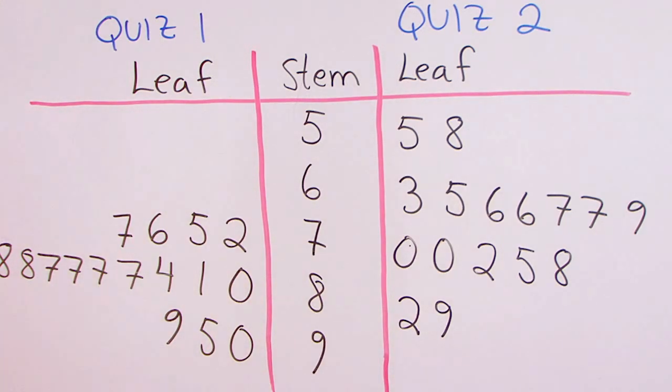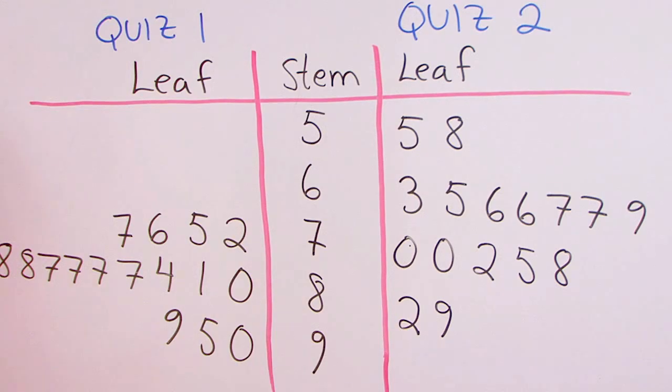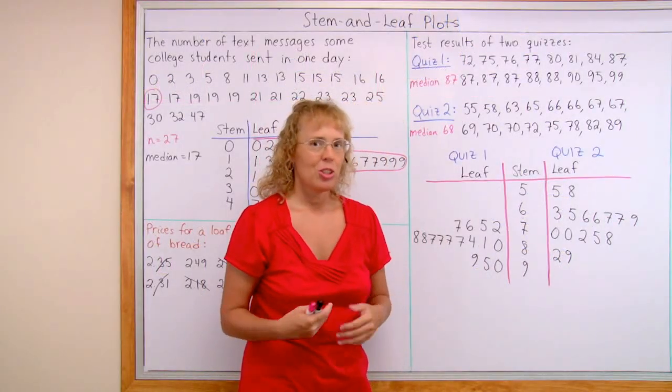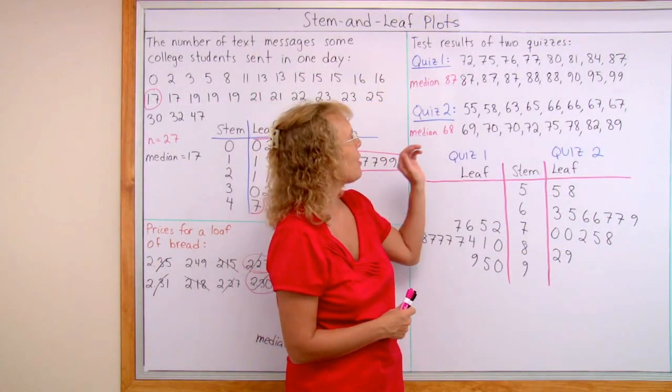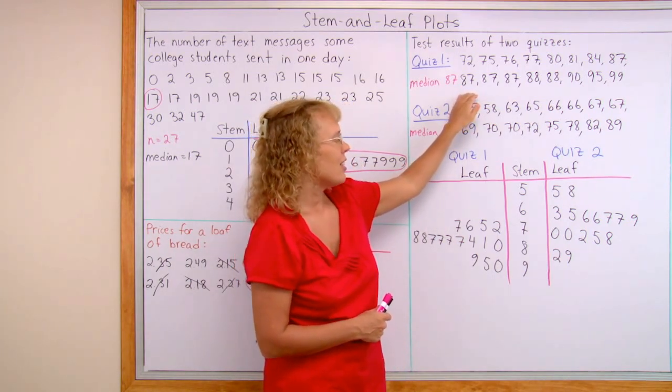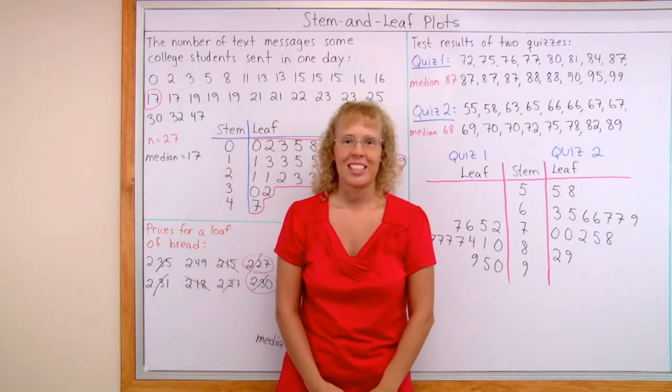And stem and leaf plots are nice, as you can see, because you can see the distribution of the data. You can see the shape of the data, kind of like what type of bar graph it would make, so to speak. And you can use the numbers to actually calculate the median. But they have their drawbacks, too. For example, if you had a very big set of data, say thousands of items here, then you could not easily draw a stem and leaf plot. We are all done with this lesson.